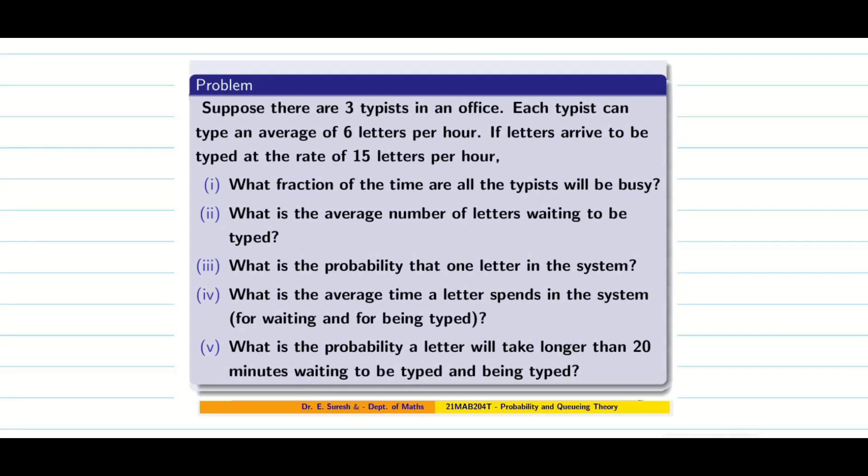Hello friends, let us see a new problem. Suppose there are three typists in office. It means three people are going to type the document. So it can be predicted as what? Multi-server, s equals three.